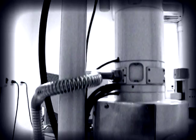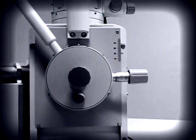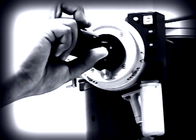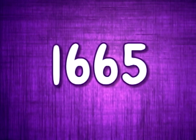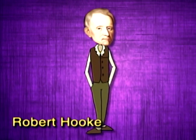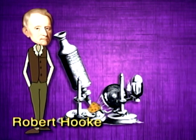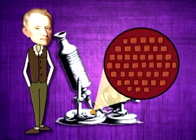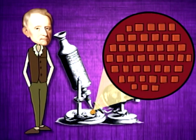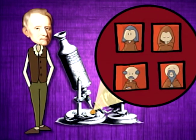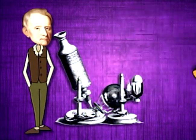The modern-day cell theory was formulated only after about 200 years since the introduction of microscopy. In 1665, English scientist Robert Hooke observed a piece of cork under a simple microscope. He observed little boxes, which he called cells, because he thought these structures resembled tiny rooms or cells occupied by monks.